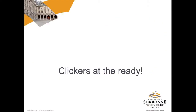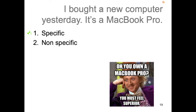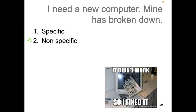'I bought a new computer yesterday. It's a MacBook Pro.' This is specific — you can identify the referent; it's actually in your hand because you just bought it. But when you say 'I need a new computer — mine has broken down,' this is non-specific. You are in a context of expressing a need, so the computer has no actual reality. It's still virtual — it's something you need, something you want.